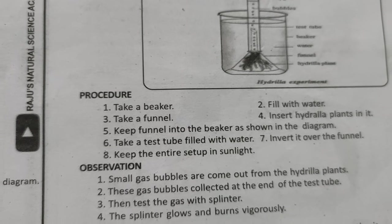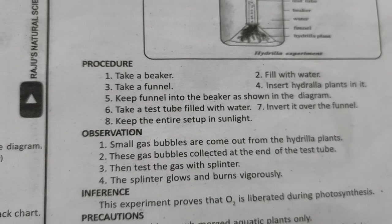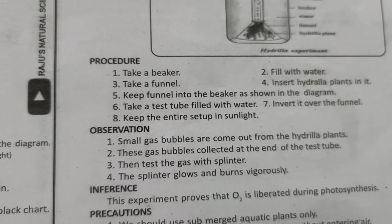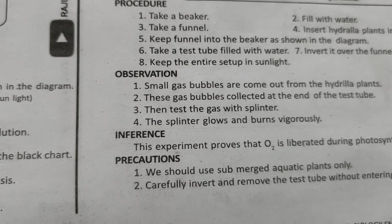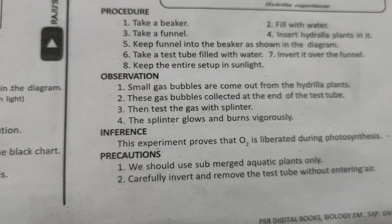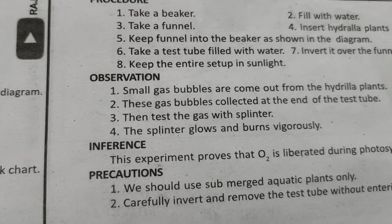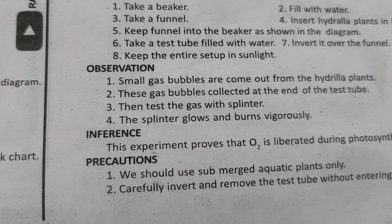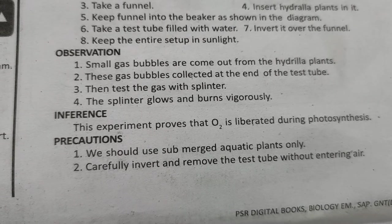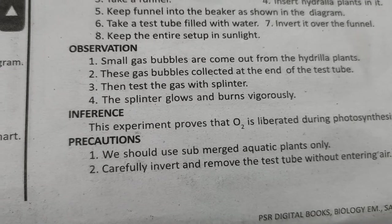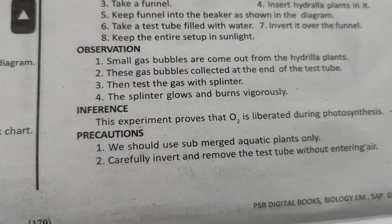Procedure: Take a beaker filled with water. Take a funnel and insert the hydrilla plant in it. Keep the funnel in the beaker. Take a test tube filled with water and invert it over the funnel. Keep the entire setup in sunlight. Observation: Small gas bubbles come out from the hydrilla plant and are collected at the top of the test tube. Test the gas with a glowing splinter — the splinter glows and burns vigorously.